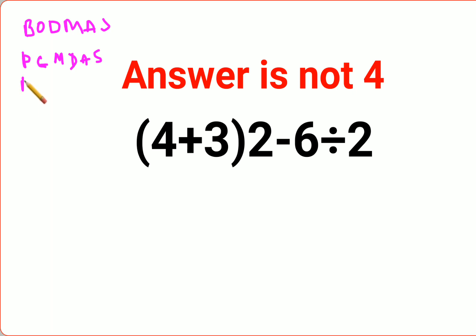First, what is the bracket? 4 plus 3, that is 7. And since there is no sign between the bracket and the number 2, you need to just keep it as multiplication minus 6 divide by 2.